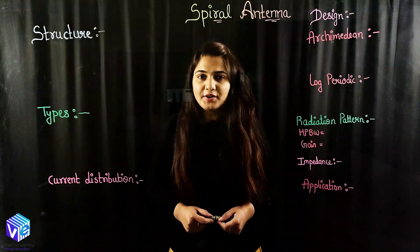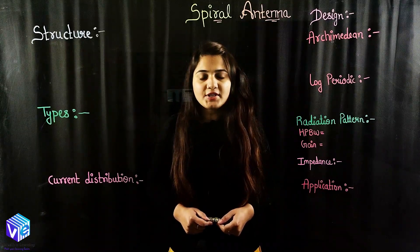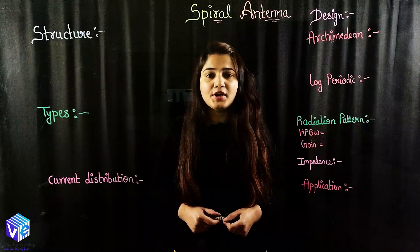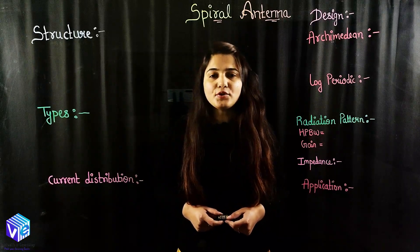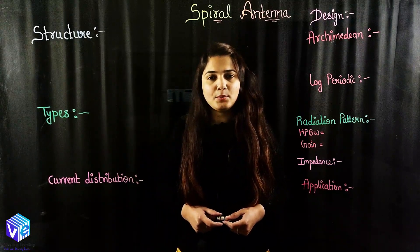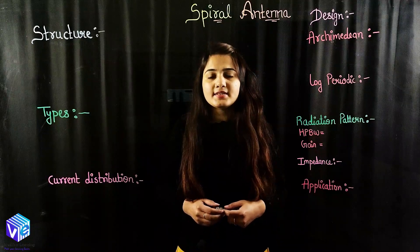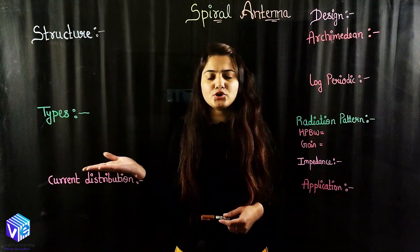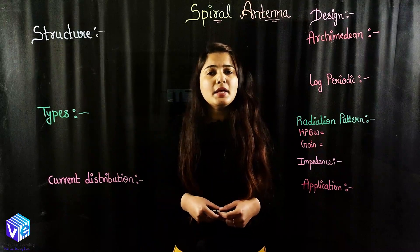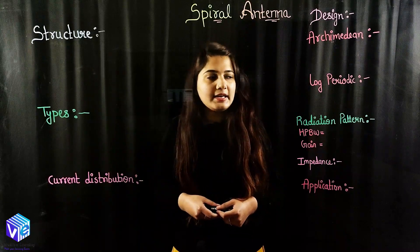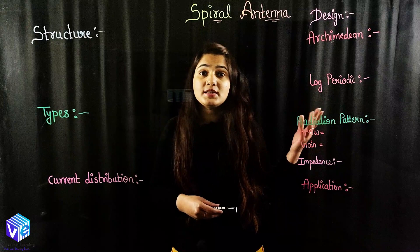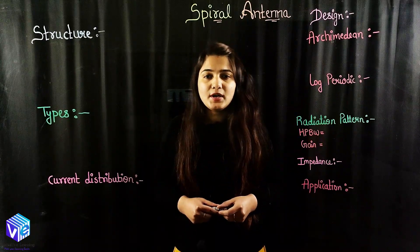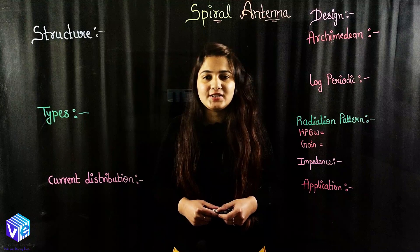Hello guys, I hope you all are doing good. I'm Vishaliki Khan and we are discussing antenna and wave propagation. Today in this session we are going to talk about the spiral antenna. We are going to see its structure, its types, current distribution on the spiral antenna, then we are going towards its designing, and after that we are going to see the radiation pattern and some of its characteristics, and at the last we are going to talk about its applications.